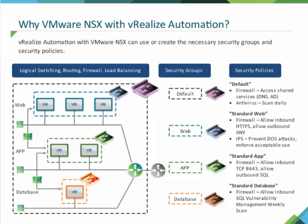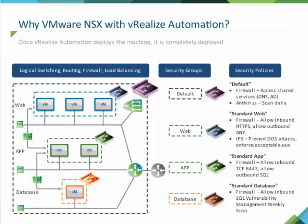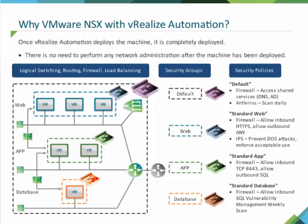If necessary, vRealize Automation could also implement VMware NSX load balancers when machines are deployed. Once vRealize Automation deploys the machine, it is completely deployed. There is no need to perform any network administration after the machine has been deployed. vRealize Automation with VMware NSX deploys the machine from start to finish.